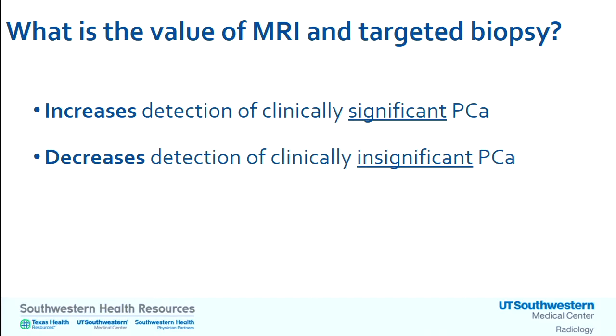The two main values of MRI and targeted biopsy validated by several studies are increased detection of clinically significant prostate cancer and decreased detection of clinically insignificant cancers — tumors better left undetected. The third major value is the high negative predictive value. If a patient has a negative MRI, chances of harboring clinically significant cancer are extremely low. More than 90% of those patients do not have cancer, and of the remaining 10%, the vast majority have small-volume, low Gleason score cancers.